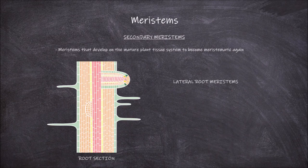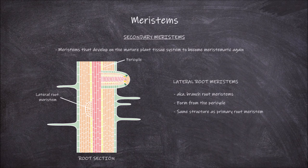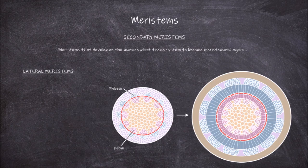Lateral root meristems, also known as branch root meristems, are another type of secondary meristem. These meristems form from the pericycle in the root and have the same structure as the primary root meristem. These meristems go on to form the lateral roots as well as adventitious roots. Another type of secondary meristem found in plants are the lateral meristems. These meristems are located within the already established stem. They cause growth of the stem laterally, so a growth in the diameter of the plant stem.